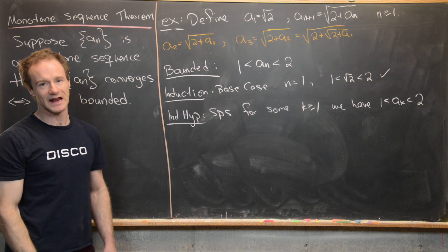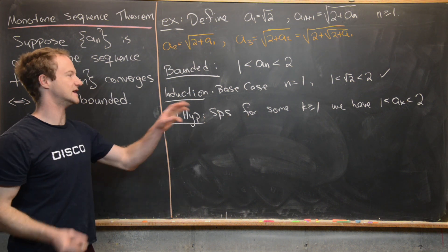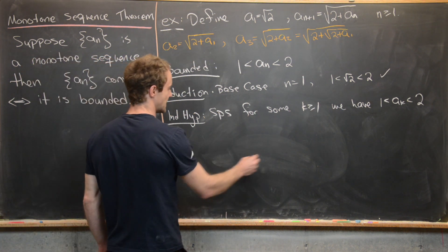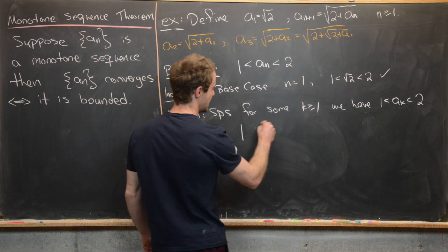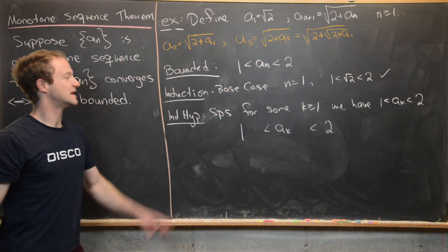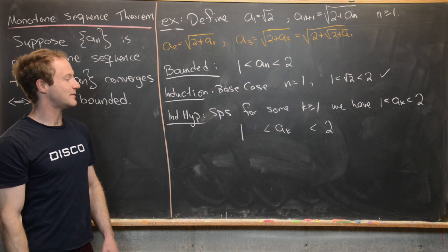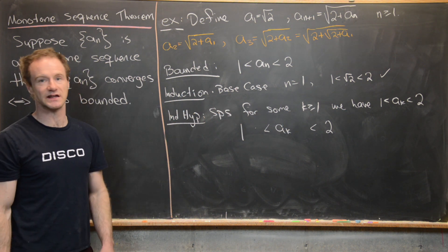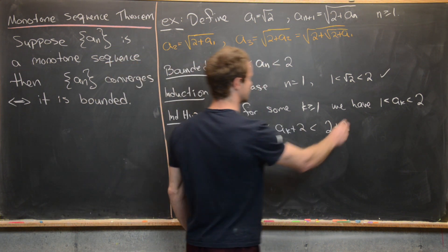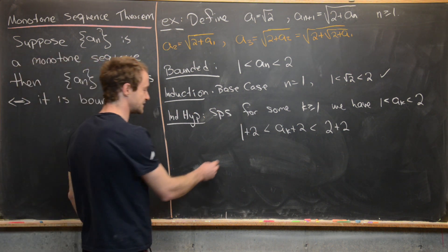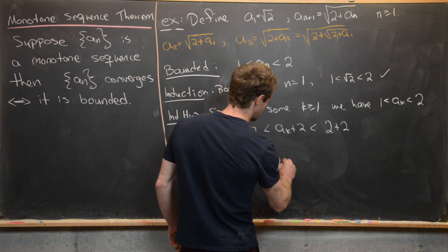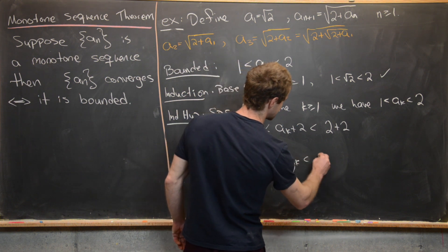What we want to do is take that inequality and manipulate it until we have a sub k+1 in the middle. Starting from 1 less than a sub k less than 2, we add 2 to all parts of the inequality. That gives us 3 less than 2 plus a sub k less than 4.